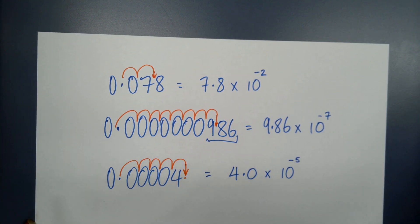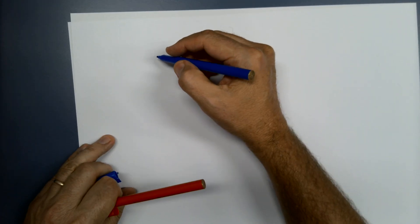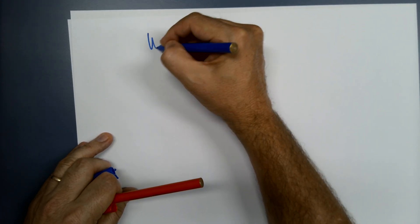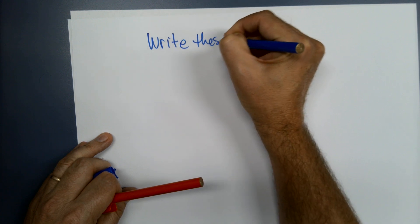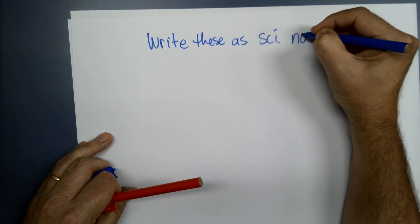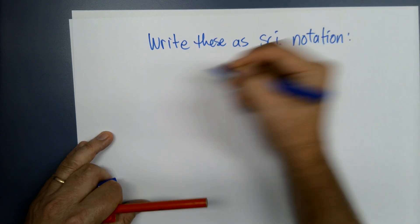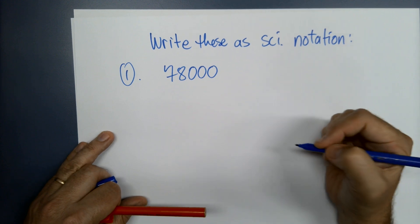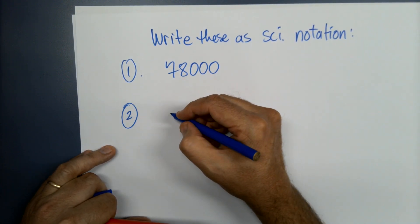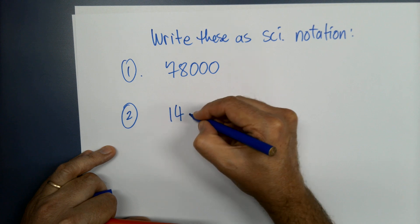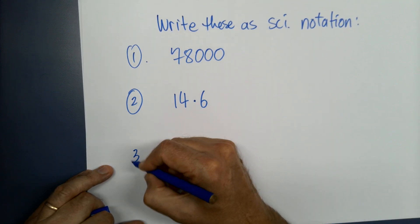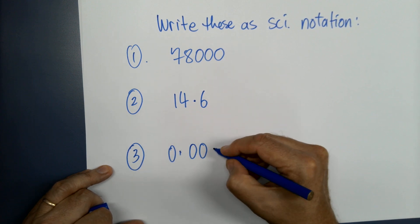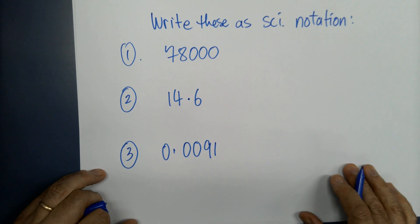Some practice now — I'll write these down and then you pause the video and do them yourself. Write these as scientific notation. Number one: 78,000. Number two: 14.6. Number three: 0.0091.